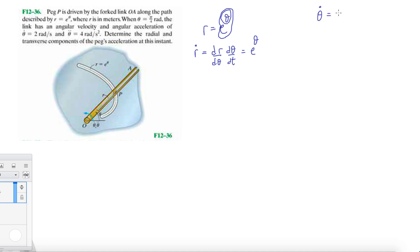We're lucky, just like in 1235, we're given theta dot and theta double dot. This makes our problem easier.